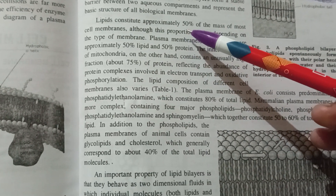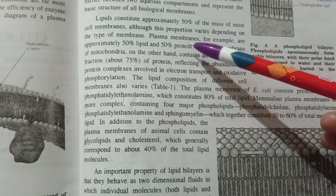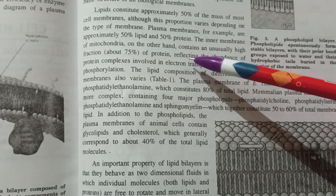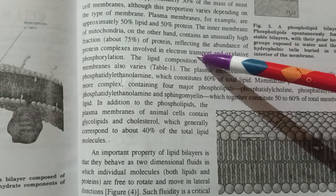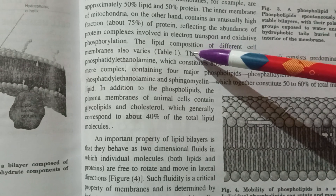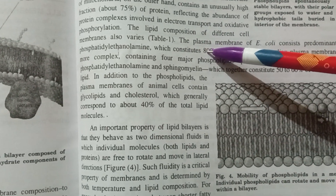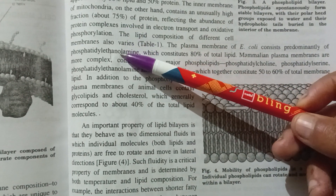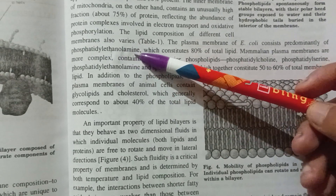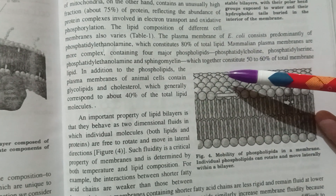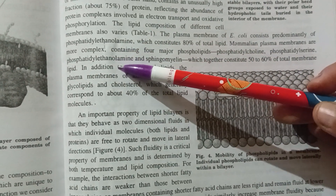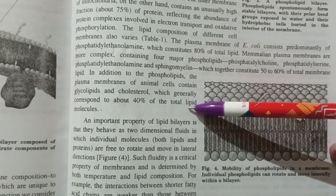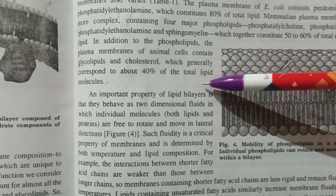Lipids constitute approximately 50% of the mass of the cell membrane, although this proportion varies depending on the type of membrane. The plasma membrane is 50% lipid and 50% protein. The inner membrane of the mitochondria contains an unusually high fraction of 75% protein, reflecting the abundance of protein complexes involved in electron transfer, oxidation, and phosphorylation. The lipid composition differs in each cell membrane. The plasma membrane consists predominantly of phosphatidylethanolamine, which constitutes about 80% of total lipid, while the mammalian plasma membrane contains phosphatidylethanolamine and sphingomyelin, together comprising 50–60% of total membrane lipid, plus glycolipids and cholesterol corresponding to about 40% of total lipids.